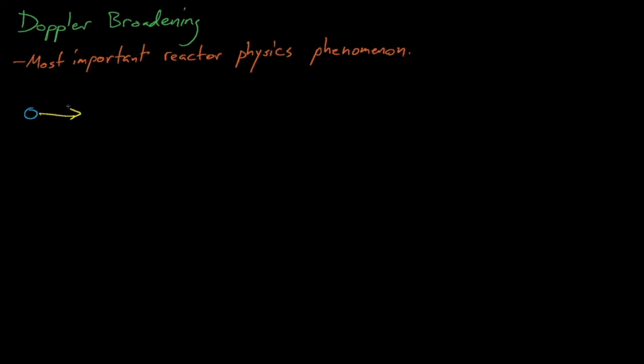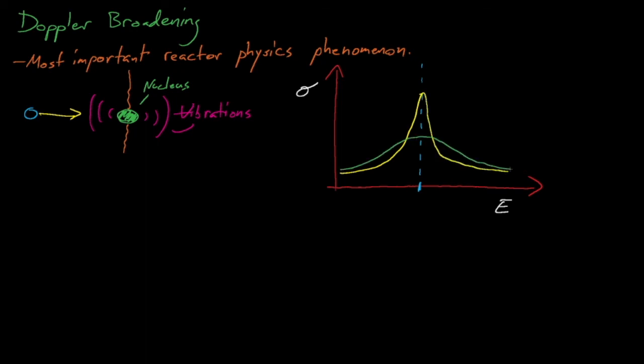So what is Doppler broadening? Well, consider a neutron that is heading towards some target nucleus. A cross-section for this neutron describes a probability that this neutron will interact with the nucleus, but this assumes that the nucleus is stationary and that only the neutron is moving. In reality, the target nucleus is vibrating based on its temperature, and these small vibrations make the neutron think that it's heading towards a nucleus at either a slightly faster or slightly slower velocity, depending on if the nucleus is randomly vibrating towards or away from the neutron. This vibration-induced smearing of cross-sections changes our cross-section resonances from narrow, tall peaks into shorter and more broad distributions. This cross-section broadening is known as Doppler broadening. Doppler broadening is more significant for lower energy neutrons because their energy is closer to the thermal energy of the target nucleus.